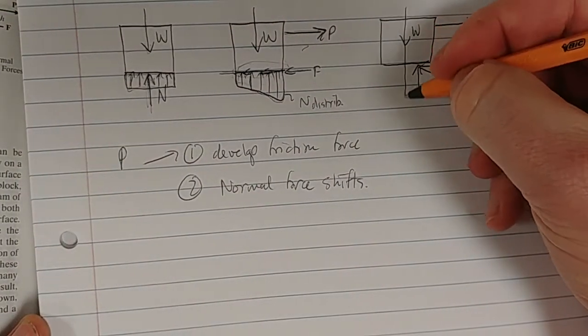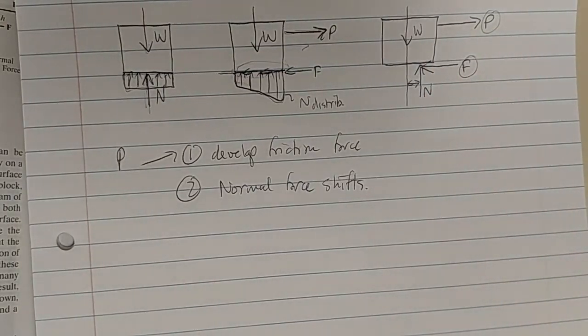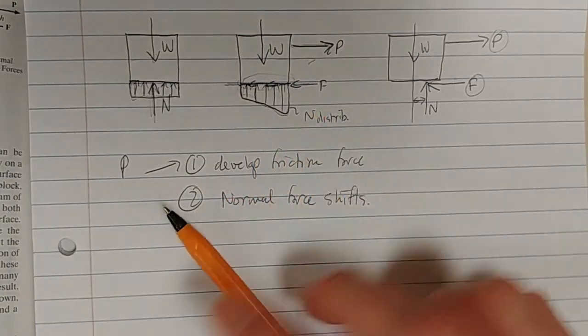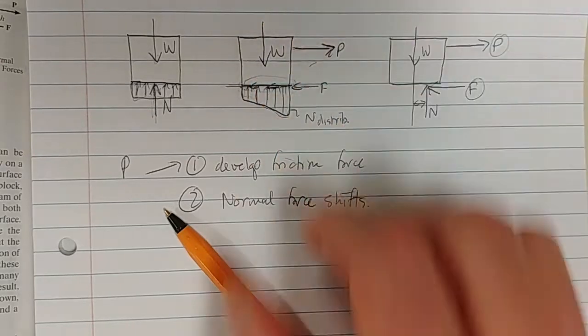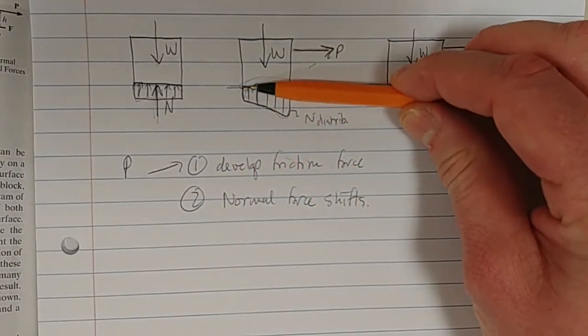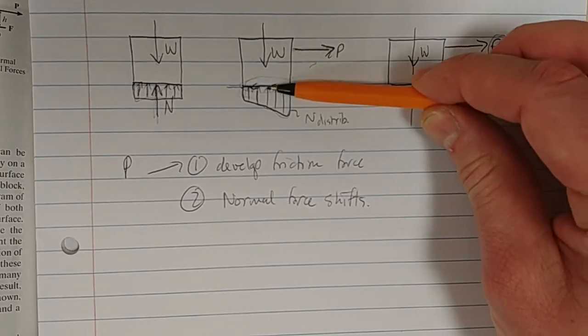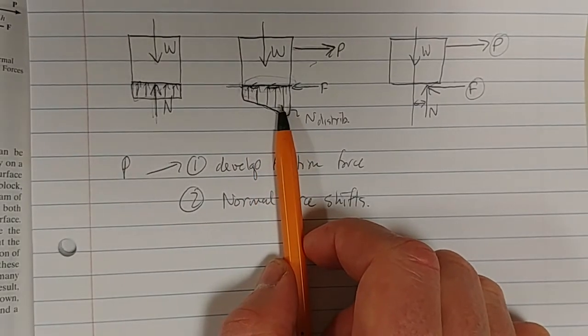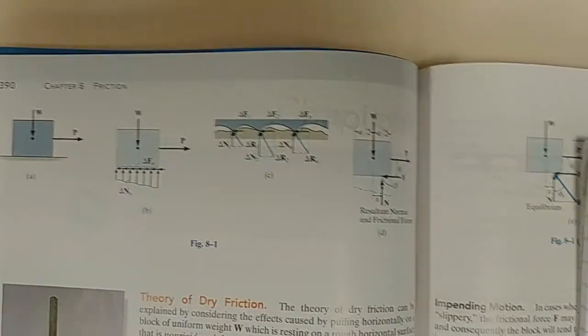So, I just want you to take note of that. We will explain this more in detail in other videos, but essentially, what's happening is that as you're applying that force P, you are essentially trying to tip this box, and that surface there loses pressure, and that surface there increases pressure. So, your normal force begins to move to that side.